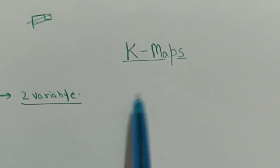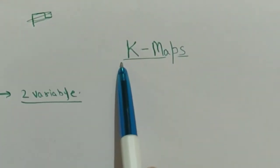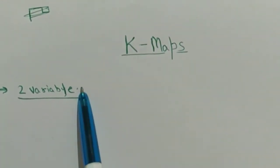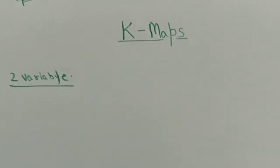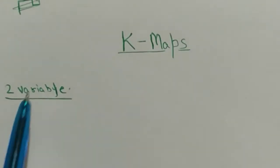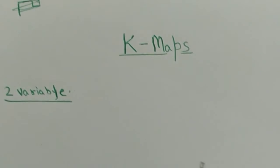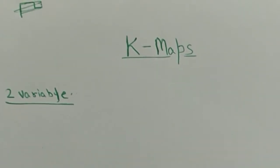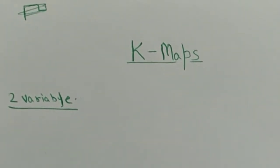Hello guys, welcome to another video by SupremeTuber. In this video, I will be teaching you two variable K-map. A two variable K-map is drawn when you have to simplify a boolean function which contains two variables.